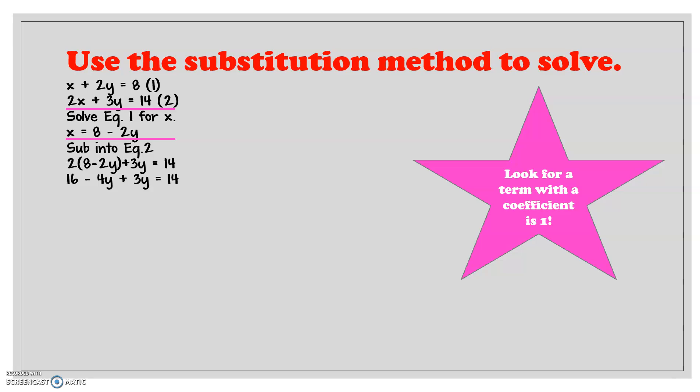Alright, so I have 16 minus 4y plus 3y is equal to 14. And then I just simplify 16 minus 1y is equal to 14. Negative 1y is equal to 14 minus 16. Negative 1y is equal to negative 2. So y is equal to positive 2.